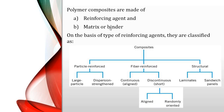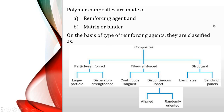Polymer composites are made up of two materials: a reinforcing agent and a binder or matrix. On the basis of reinforcing agents, they are classified as particle reinforced composites, fiber reinforced composites, and structural composites. Particle reinforced composites contain particles embedded in the matrix — these may be large or very small in dispersion form. Structural composites contain sheets embedded in the matrix, such as laminates or sandwich panels.